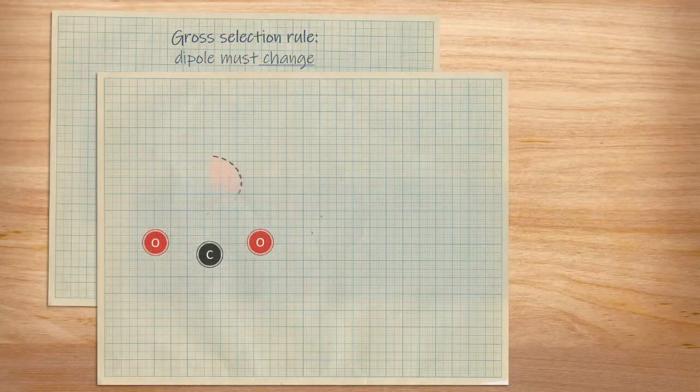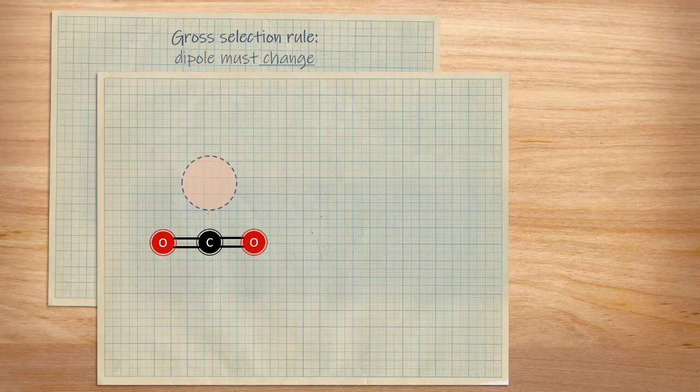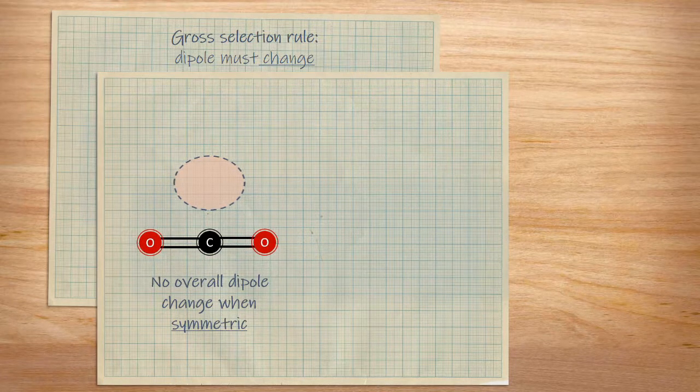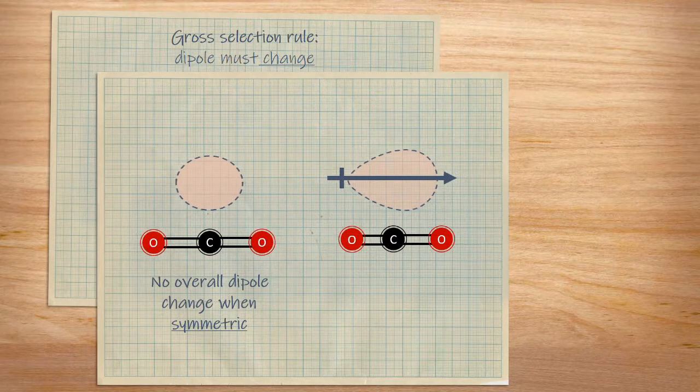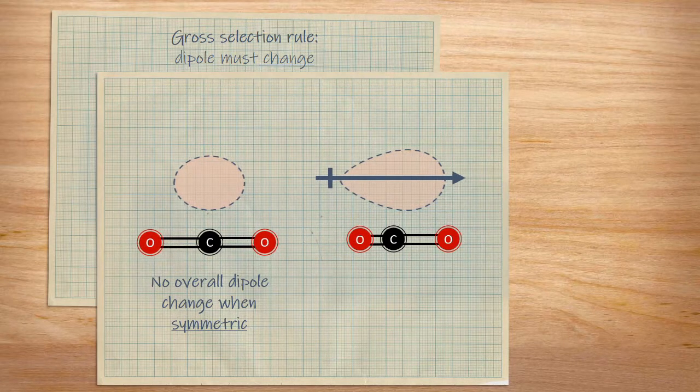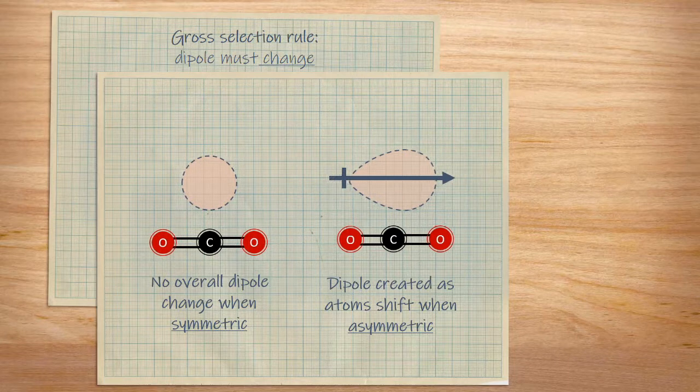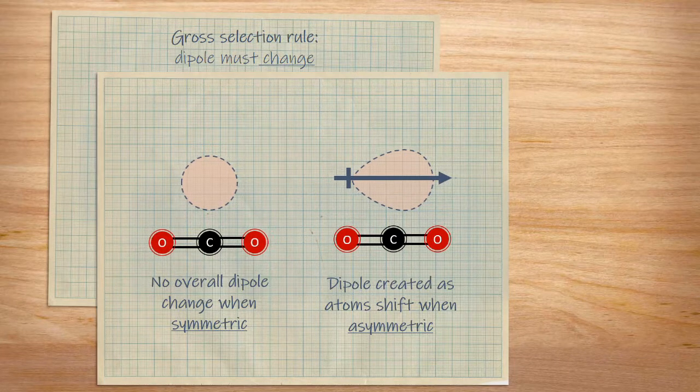We can see this in carbon dioxide. Overall, both oxygen atoms pull the charge equally in both directions—no overall dipole. And this remains true if the vibration is symmetrical. If it's asymmetrical, however, a dipole is created as the bond lengths are no longer equal. The charge will be pulled in each direction differently because of this.